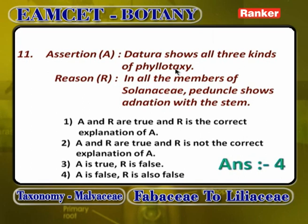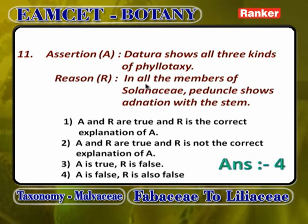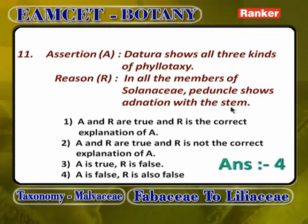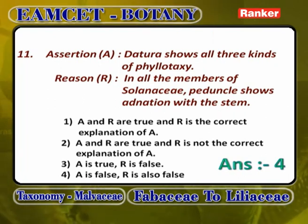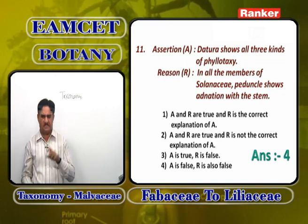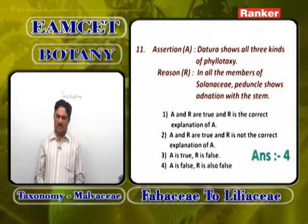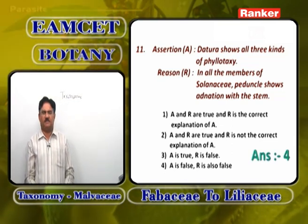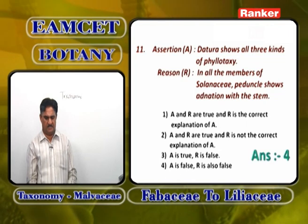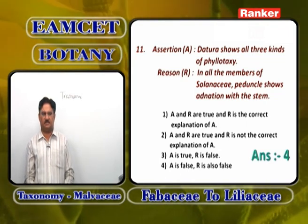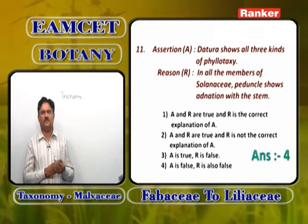Datura shows all three kinds of phyllotaxy: alternate, opposite, and whorled. In all members of Solanaceae, petiole shows adnation with the stem, but not peduncle. Peduncle shows adnation with the stem mostly in Solanum nigrum, Solanum melongena, Solanum tuberosum. Because of adnation of petiole with the stem, it shows opposite and whorled phyllotaxy. Answer is 4.